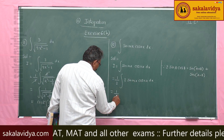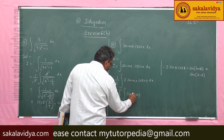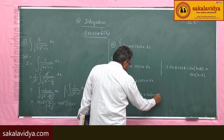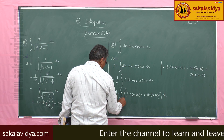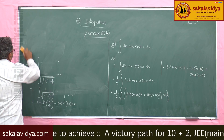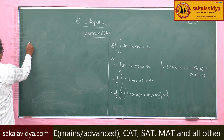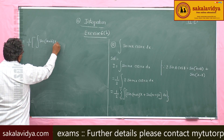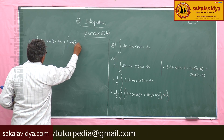We can write (1/2) times the integral of sin(m+n)x plus sin(m-n)x dx. Separating the brackets, this equals (1/2) times integral of sin(m+n)x dx plus integral of sin(m-n)x dx.